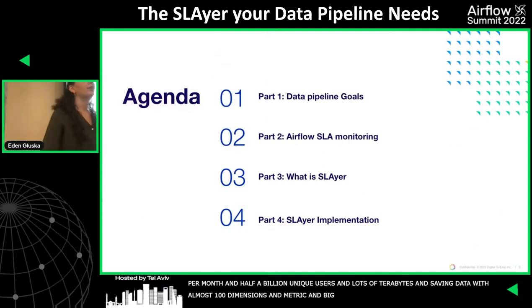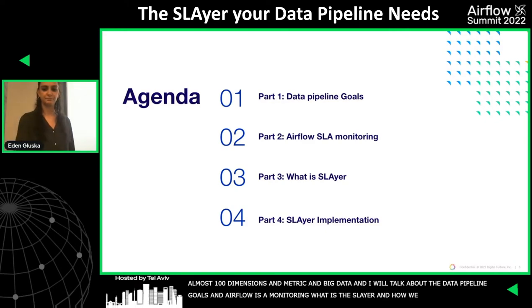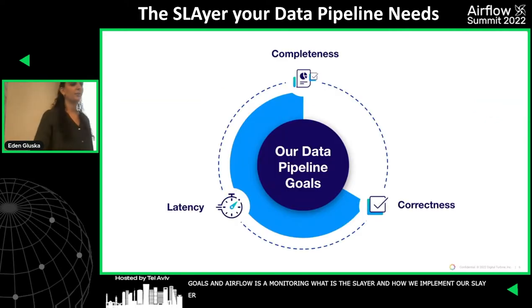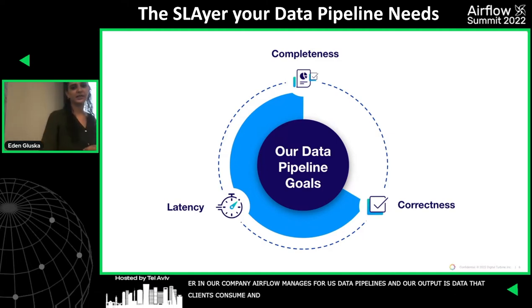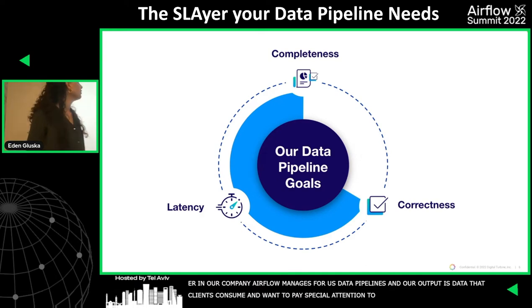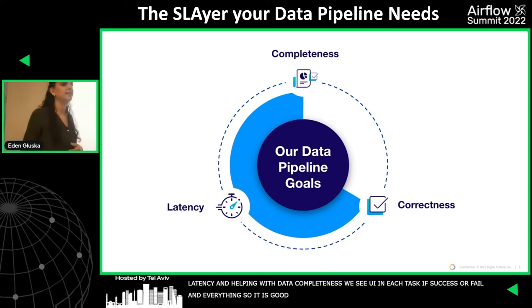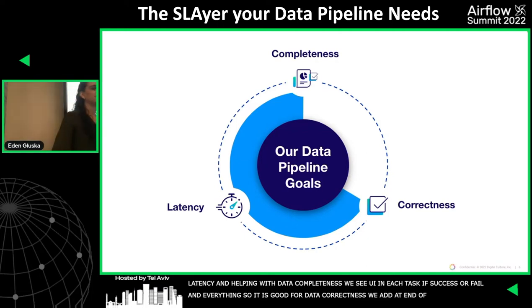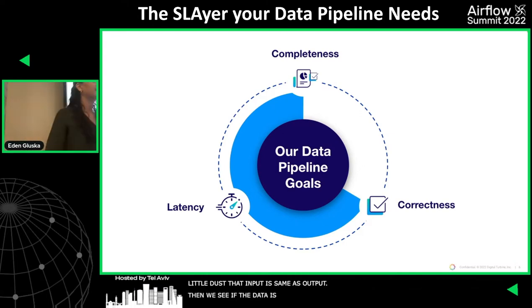Today I'm going to talk about our data pipeline goals, Airflow SLA monitoring, what the Slayer is and how we implement our Slayer. In our company, Airflow manages our data pipelines. Because our data pipeline output is the data that our clients consume, we want to pay special attention to data completeness, correctness, and latency. Airflow helps us with data completeness — we can see in the UI for each task if it succeeded or failed. For data correctness, we add at the end of the pipeline a little task that checks if the input is the same as the output for some metrics. And for data latency, which is what we're going to talk about today, we need to define for our clients the SLA.